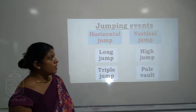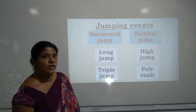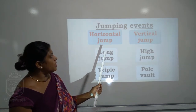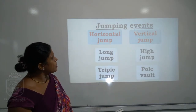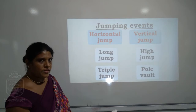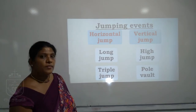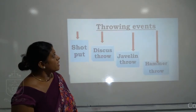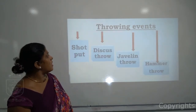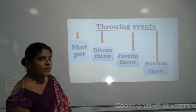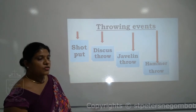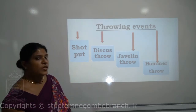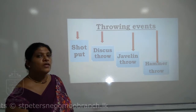On the jumping events, we will look into the classification: horizontal jumping and vertical jumping. On the horizontal jumping, long jump and the triple jump. On the vertical jumps, we have high jump and the pole vault. On the throwing events, we shall discuss shot put, javelin throw, and hammer throw. These are the activities we can carry out under throwing events.